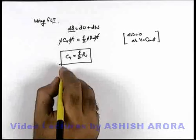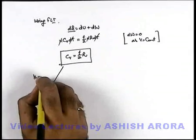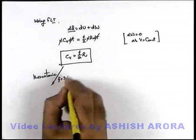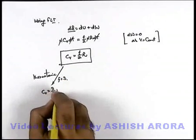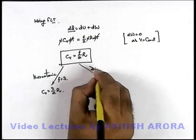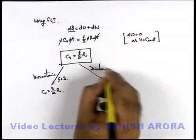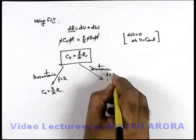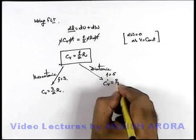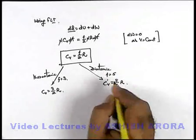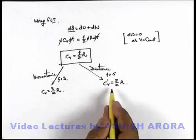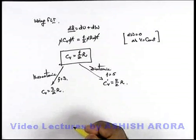For a monoatomic gas, degrees of freedom f = 3, so Cv = (3/2)R. For a diatomic gas, degrees of freedom f = 5, so Cv = (5/2)R. Similarly, for polyatomic gases, depending on the number of degrees of freedom, we can define the value of Cv for the specified case.